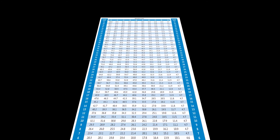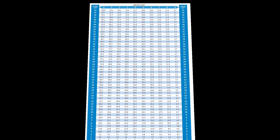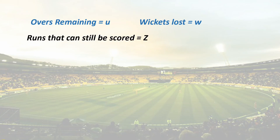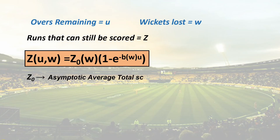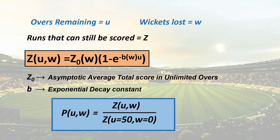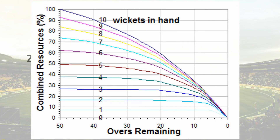The resource percentage values in the table are calculated using two factors: overs remaining U and wickets lost W. The runs that can still be scored, Z, is expressed as: Z = Z₀(W) × (1 − e^(−B(W) × U)), an exponential decay relationship where Z₀ is the asymptotic average total score for unlimited overs with W wickets available, and B is the exponential decay constant. Both quantities vary with W only. The resource percentage P(U, W) equals Z at that combination divided by Z at U = 50 and W = 0 for ODI cricket, which can be plotted as a graph.